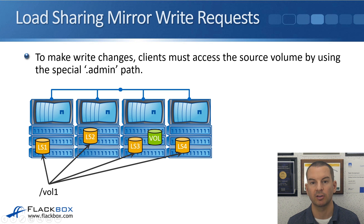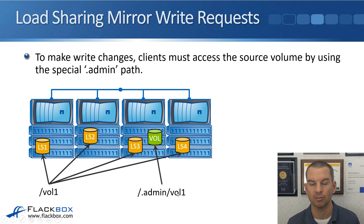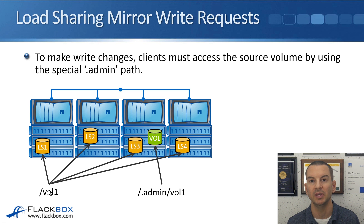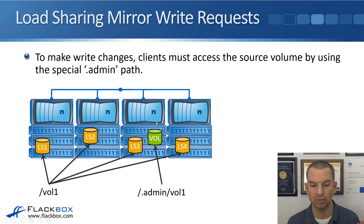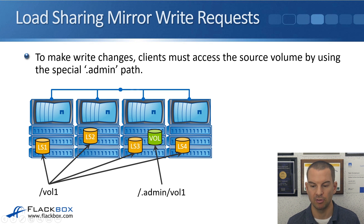If a write request comes in for the volume, the client has to connect to .admin/vol1. When using load-sharing mirrors, connecting to the volume name — say vol1 — always defaults to read-only access. For the client to write changes to the source volume, they have to map a drive using a different path with .admin before the actual volume name. If a client connects to the .admin path and it hits a node other than node 3, it will go over the cluster interconnect to reach the source volume and be able to write changes there.